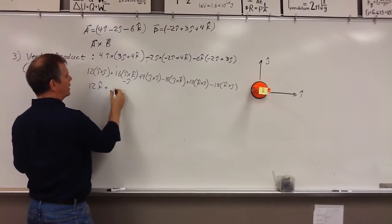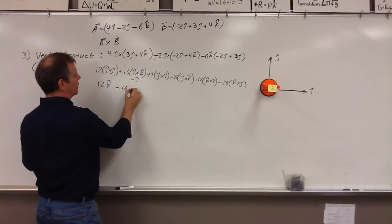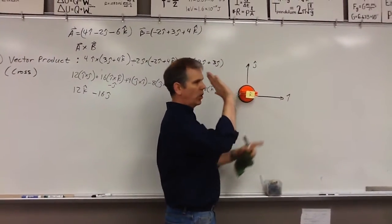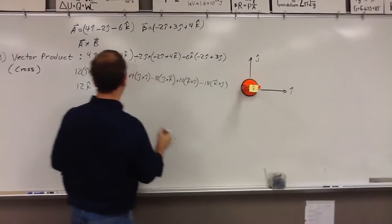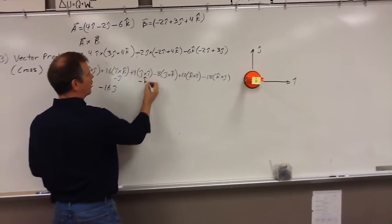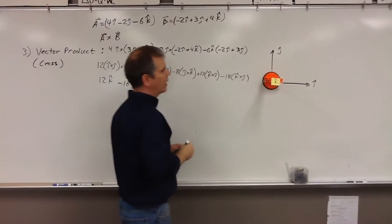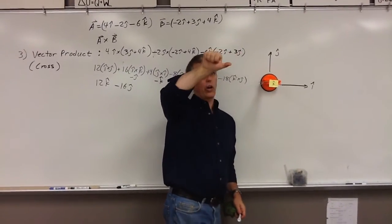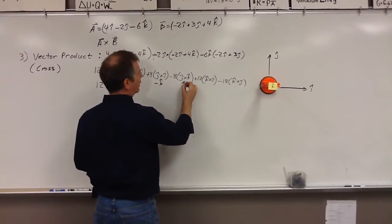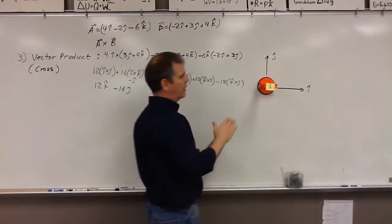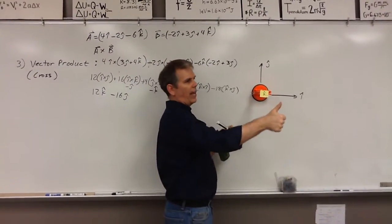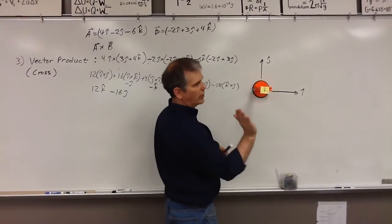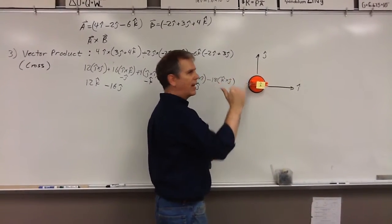So that gives me negative 16j-hat. j cross i gives negative k. Let me just draw these underneath here and do all of them. j cross k — notice I'm having to move my body — j cross k is i-hat. k cross i is j. k cross j is negative i-hat.